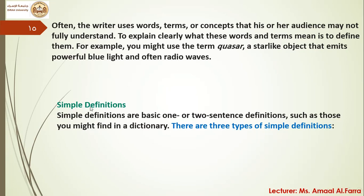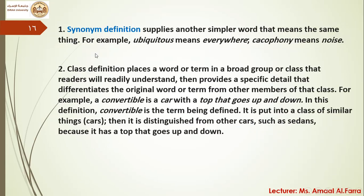Simple definitions are basic one or two sentence definitions, such as those you might find in a dictionary. There are three types. Number one: synonym definition, which supplies another simpler word that means the same thing. For example, 'ubiquitous' means everywhere; 'cacophony' means noise.